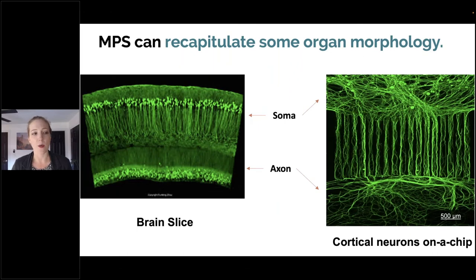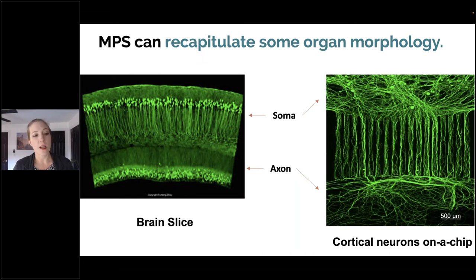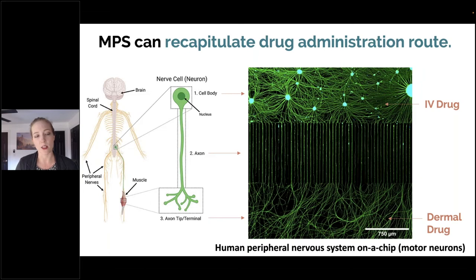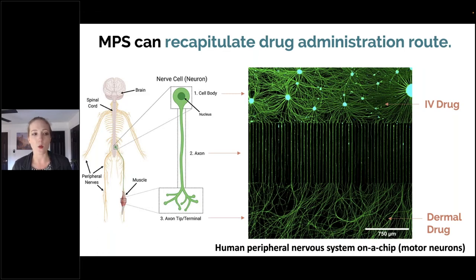MPS can also recapitulate some very important aspects of organ morphology. Looking at brain MPS and neuron MPS slides, you can see neurons arranged very precisely with the soma on one side and the axon on the other — this is polarized neuronal arrangement, very relevant to how our organs are arranged. Due to this, MPS can actually recapitulate even drug administration route, which is very different from traditional in vitro cell culture. For a neuron MPS, if testing an IV drug, you apply it to the cell body; if testing a dermally administered drug, you apply it to the axon tip.